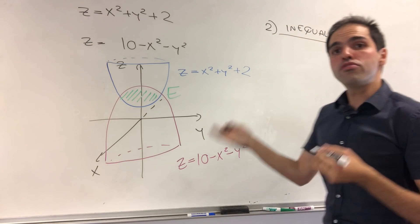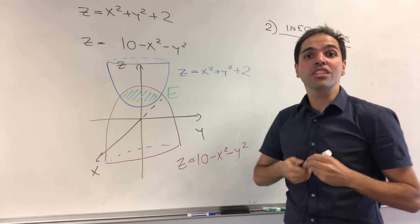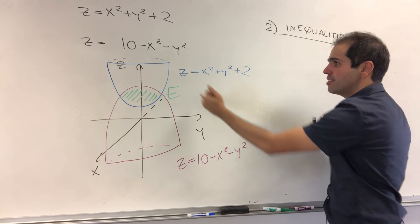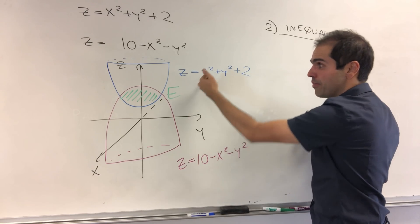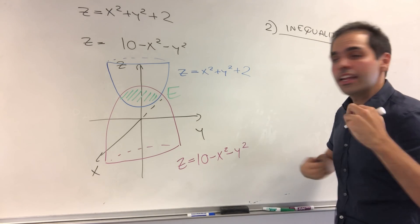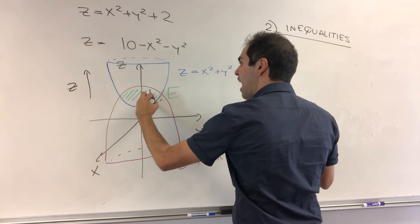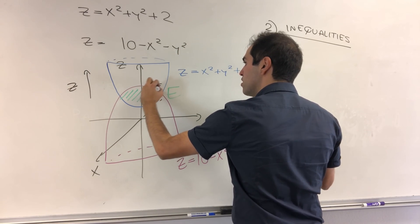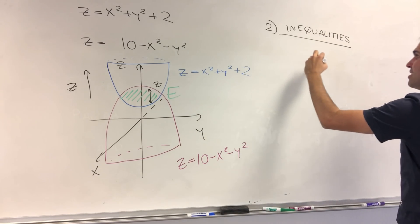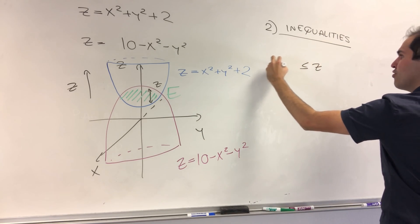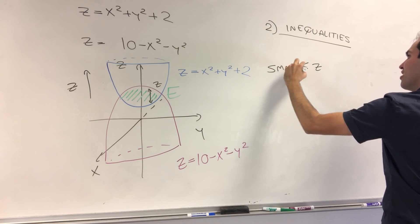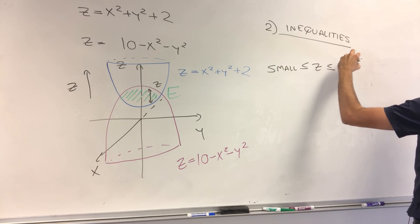And first, we need to figure out what direction the region is facing in, but since here we have z equals something and z equals something, it actually faces the z direction. Which means we have to do z first, and in that case, z is between the smaller function and the bigger function, or between top and bottom.